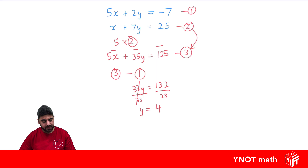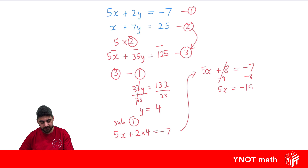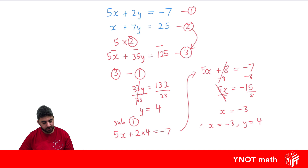Now we sub that value into any one of the equations — usually the one with smaller values, so let's sub into equation 1. We've got 5x plus 2 times 4 equals minus 7. So 5x plus 8 equals minus 7. Subtracting 8 from both sides: 5x equals minus 15. Dividing both sides by 5, x equals minus 3. Therefore, x equals minus 3 and y equals 4. And graphically, if we graph these two straight lines, they would intersect at (minus 3, 4).